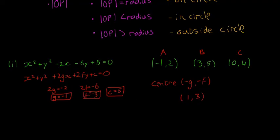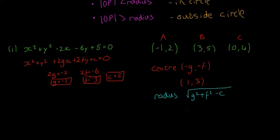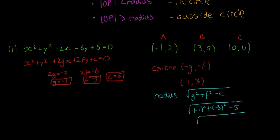Now for the radius, the formula — which is in the tables book — is the square root of g squared plus f squared minus C. That gives us the square root of (−1) squared plus (−3) squared minus 5, which is the square root of 1 plus 9 minus 5, equal to the square root of 5. So the radius is √5.